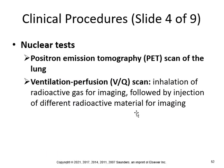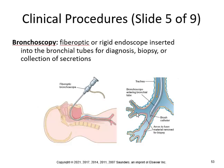Nuclear tests include the PET — positron emission tomography — and the ventilation-perfusion VQ scan, which involves inhalation of radioactive gas for imaging followed by injection of different radioactive material for imaging. Bronchoscopy is a fiber-optic or rigid endoscope inserted into the bronchial tubes for diagnosis, biopsy, or collection of secretions.